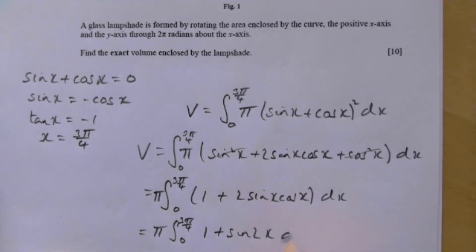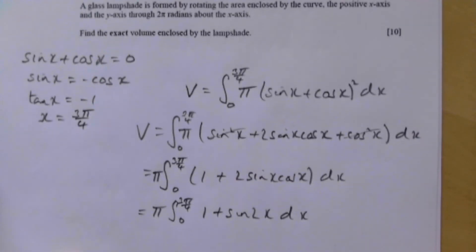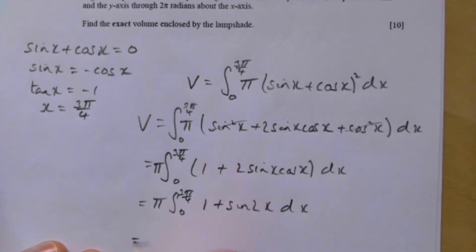Plus sine 2x dx. Then we integrate that. The one goes to an x, and sine 2x is going to be—sine goes to minus cos, and the fact that it's a two means there's going to be a half at the front, so it's minus a half cos 2x.